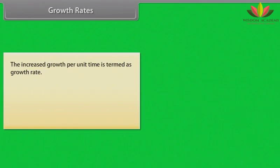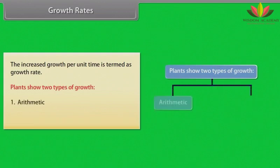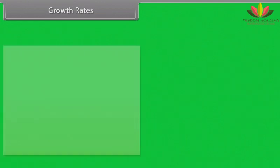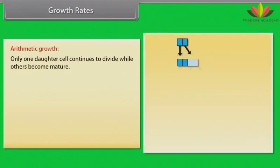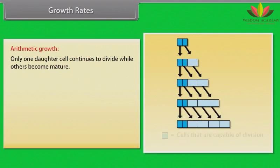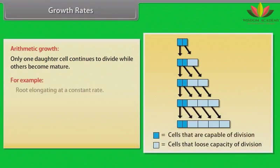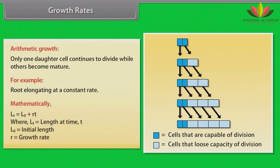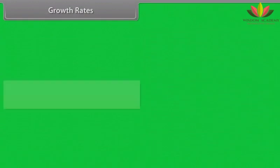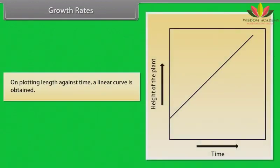The increased growth per unit time is termed as growth rate. Plants show two types of growth: arithmetic and geometric. In arithmetic growth, only one daughter cell continues to divide while others become mature. For example, root elongating at a constant rate. Mathematically, Lt = L0 + Rt, where Lt is length at time t, L0 is initial length, and R is growth rate. On plotting length against time, a linear curve is obtained.